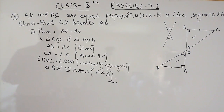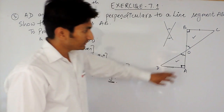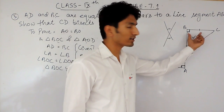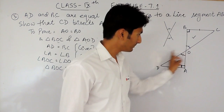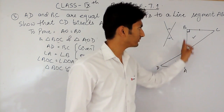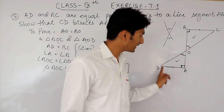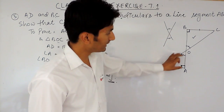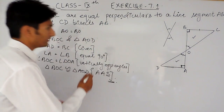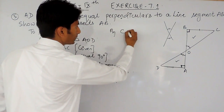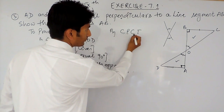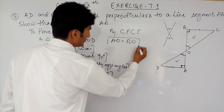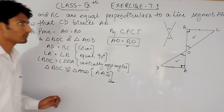By the Angle Angle Side property we can conclude that these two triangles are congruent, meaning all six parts of this triangle must be equal to all six parts of the other triangle — three sides and three angles. So obviously this side must equal this side. By CPCT, Corresponding Parts of Congruent Triangles, we can conclude that AO must be equal to BO, which is what we needed to prove.